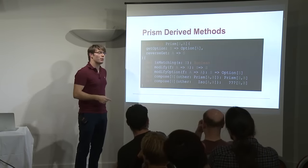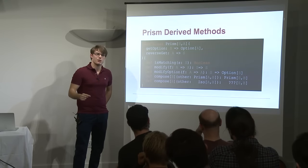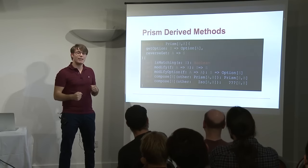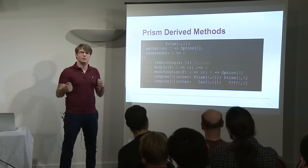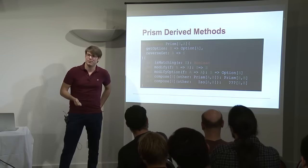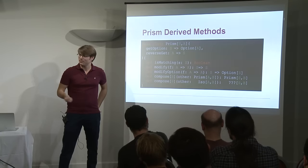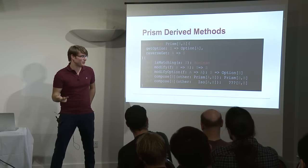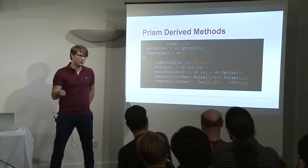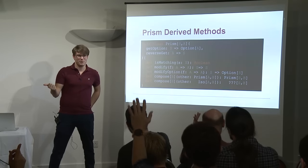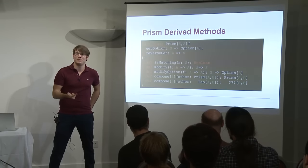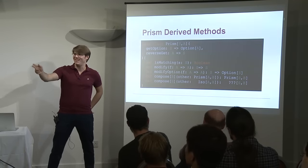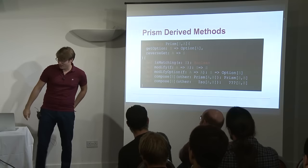Most importantly we have a compose method. If we have a prism between S and A, and a prism between A and B, we get a prism between S and B — exactly the same as for ISO. The cool part is that we can also compose a prism and an ISO together. If I have a prism SA and an ISO AB, I get something of type SB. What is this something? It's a prism, because an ISO is a prism where the undefined area is empty. That's why all ISOs are prisms, and that's why when we compose a prism with an ISO, we get a prism.